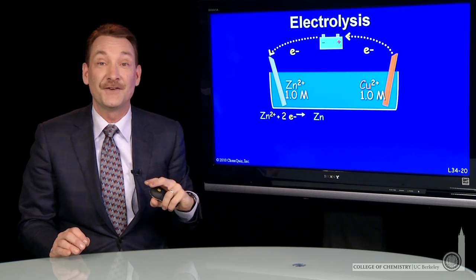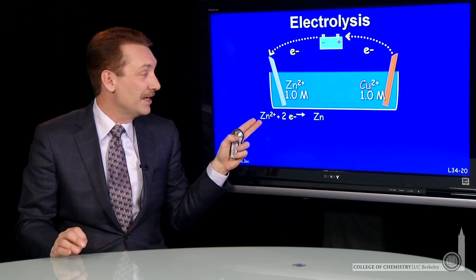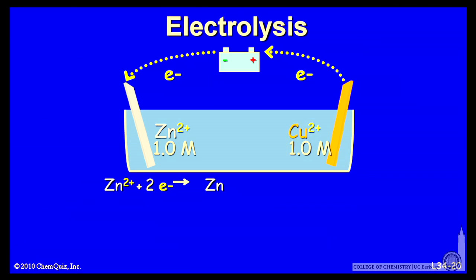When there's a sufficient external voltage, there'll be a reaction that occurs here: a reduction of zinc ions to zinc metal, and an oxidation, copper metal being oxidized to copper ions.